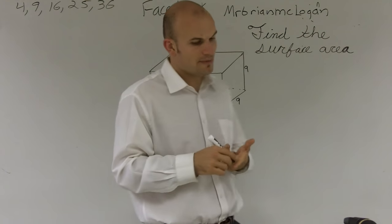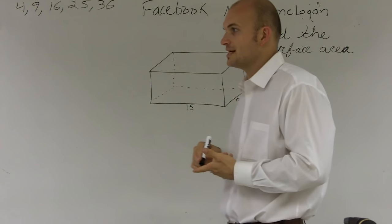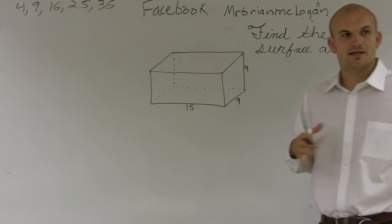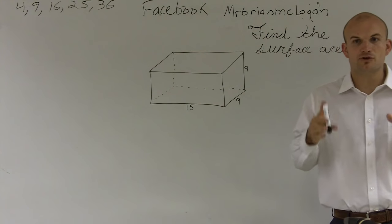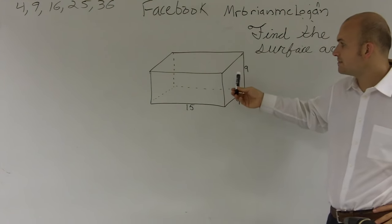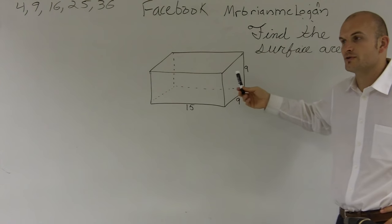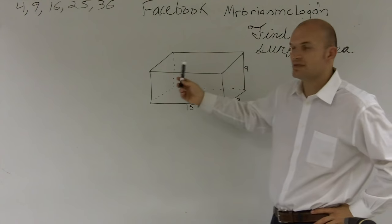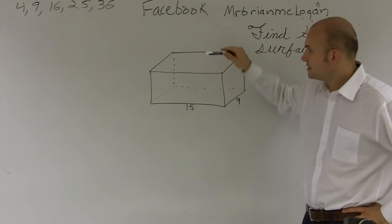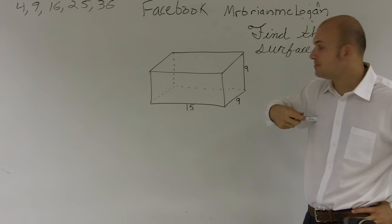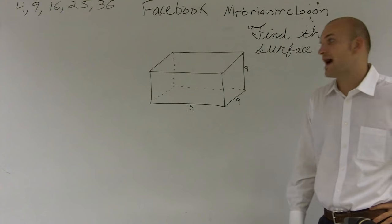One important thing to remember: since we're dealing with a rectangular prism, just like the rules of a rectangle, you're going to have opposite and equal sides. The right side is exactly the same as the left side, the top is exactly the same as the bottom, and the front is exactly the same as the back.